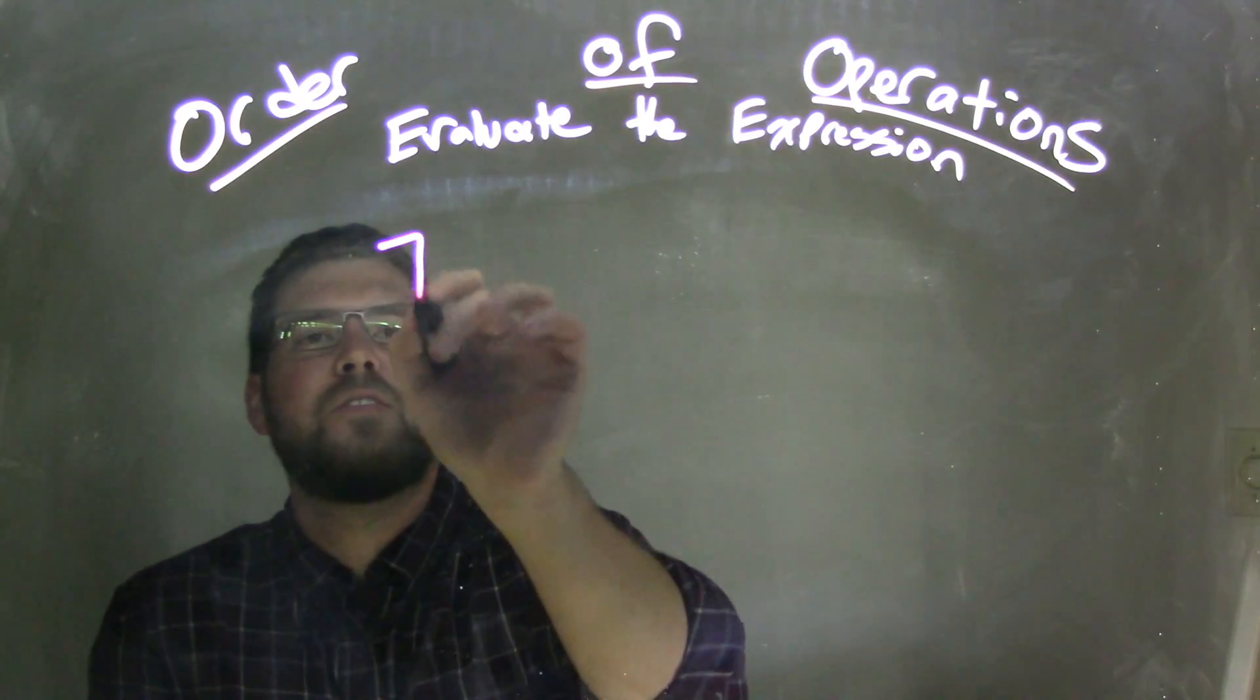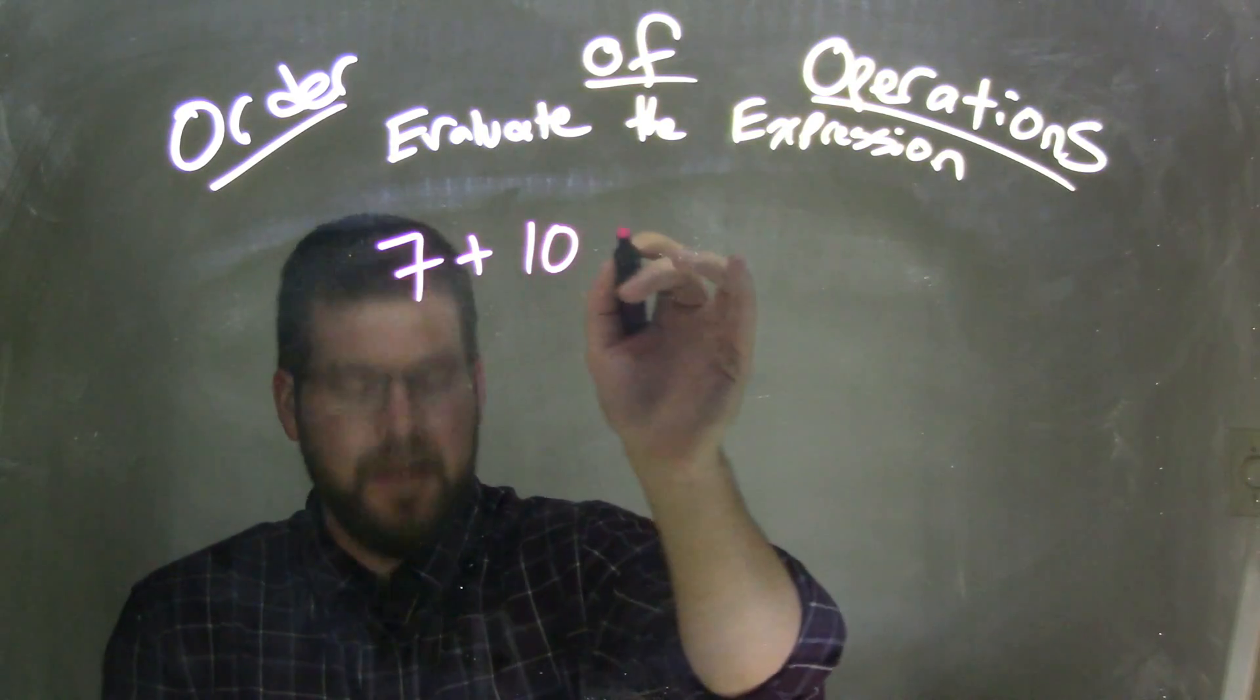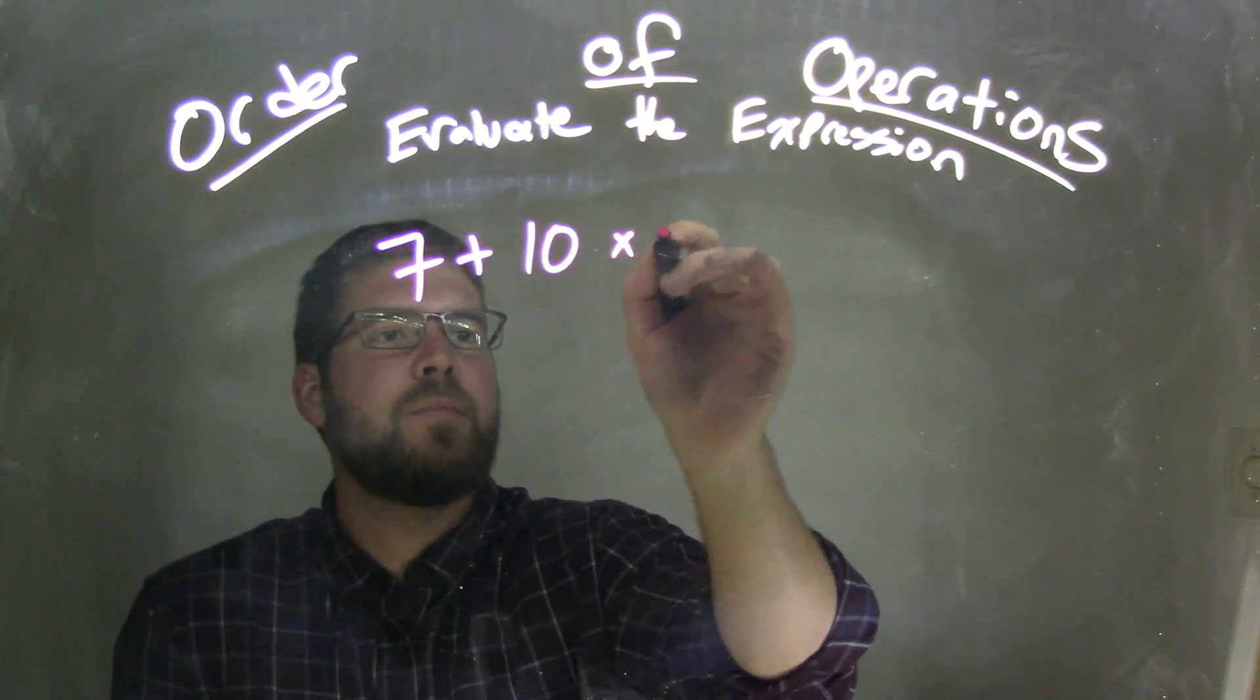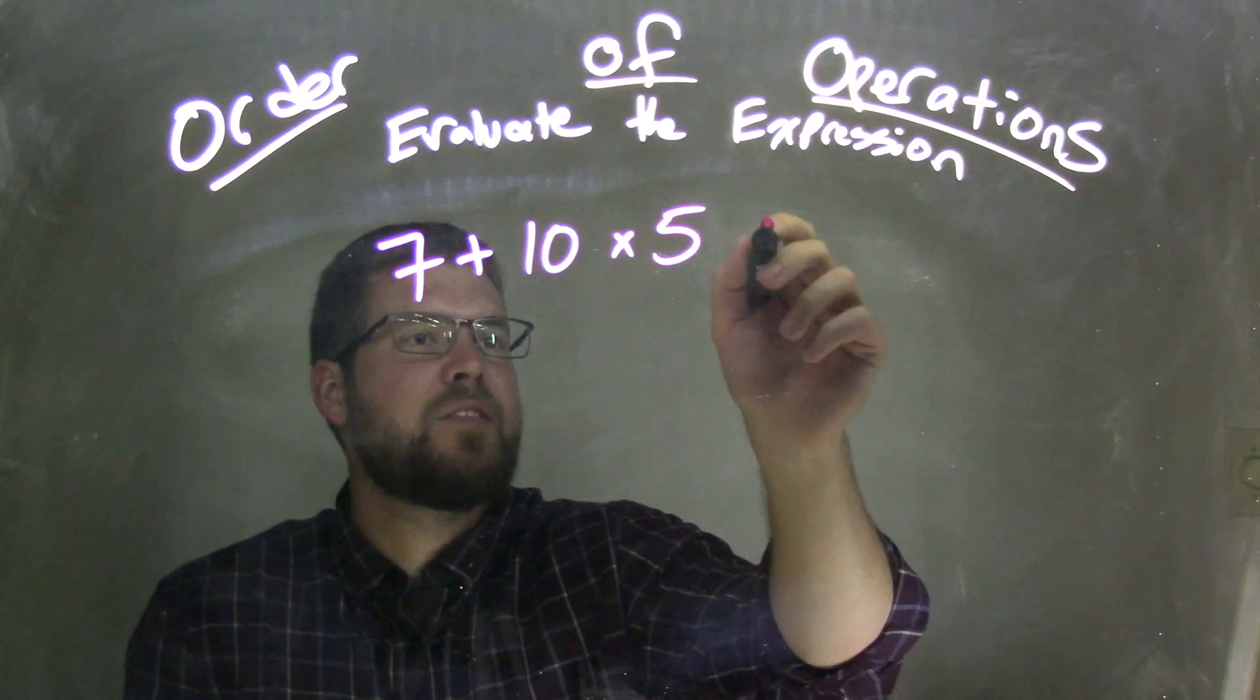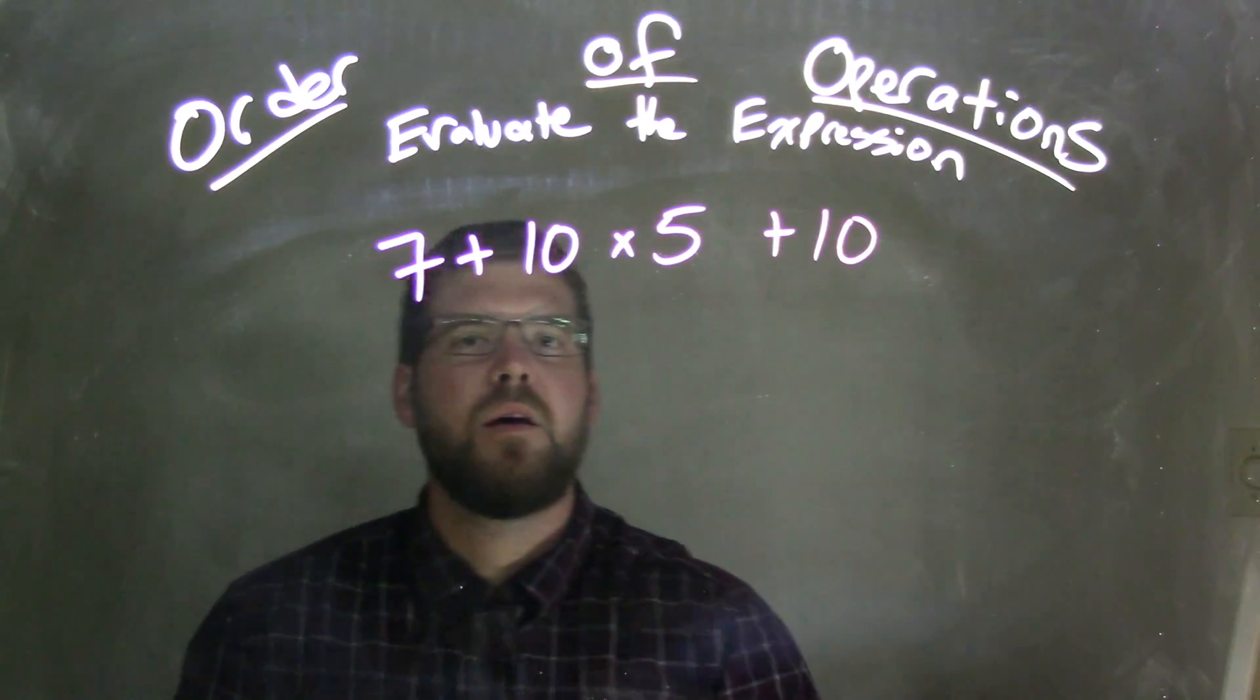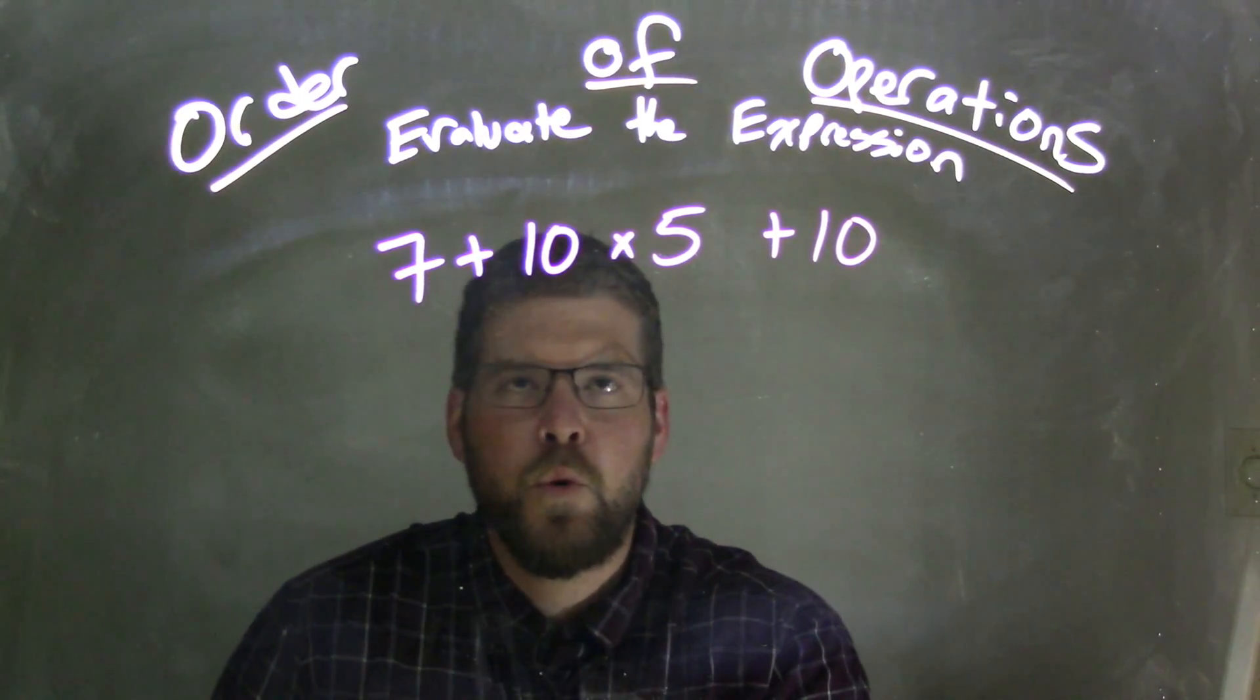So if I was given this, 7 plus 10 times 5 plus 10, and I want to solve that using the order of operations.